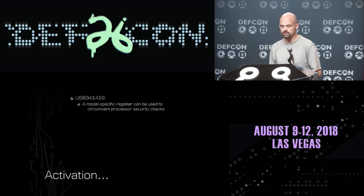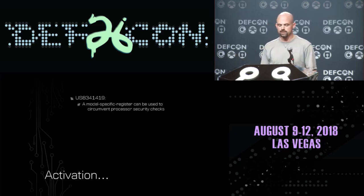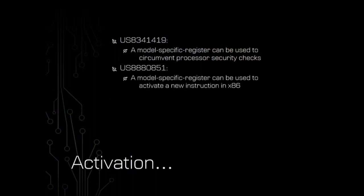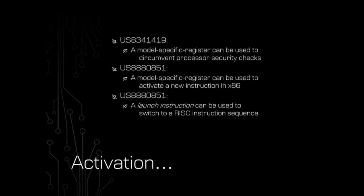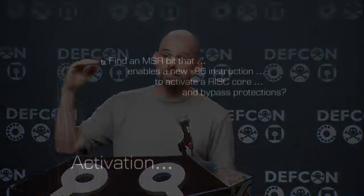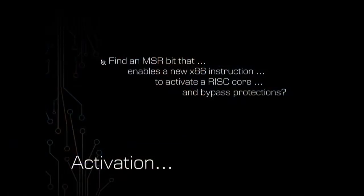That's absolutely worth exploring for security purposes. Three patents give us initial ideas on how the overall mechanisms might work: one tells us an MSR can circumvent processor security checks; another tells us an MSR can activate a new x86 instruction; and another tells us a launch instruction can switch to a RISC instruction sequence. Putting those together, we end up with a sequence: find an MSR bit that, when toggled, activates a new x86 instruction that in turn activates a RISC core capable of bypassing the processor's security protections.